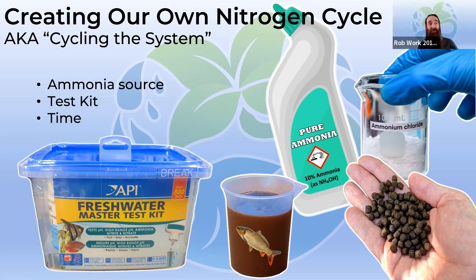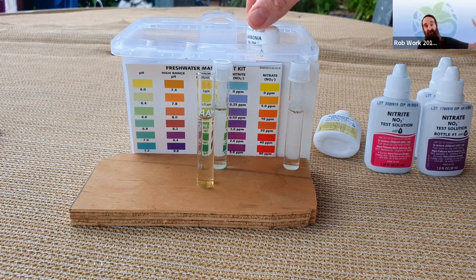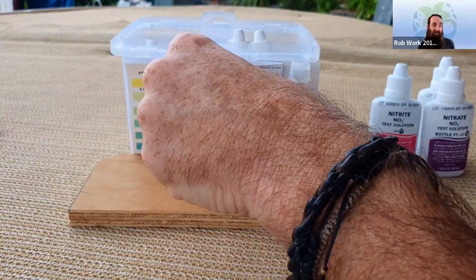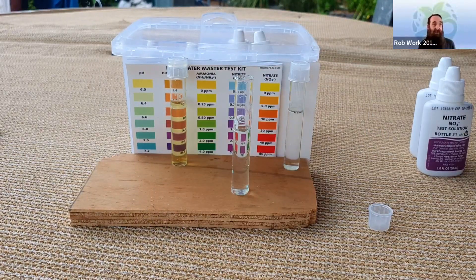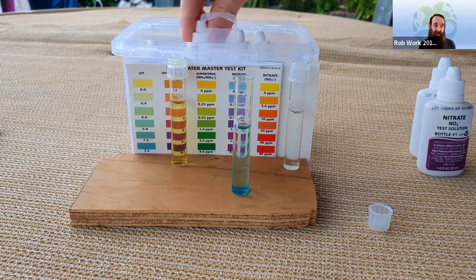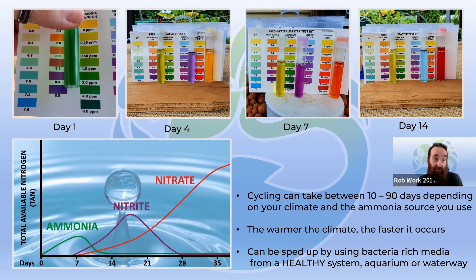You will need a test kit so you can monitor the elevation of ammonia within the system and know how the cycling is going. The cycling process can take anywhere up to a couple of months depending on your climate, where you live, the heat, and also the ammonia source.